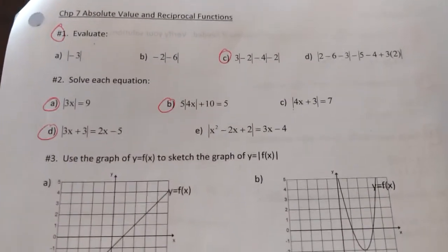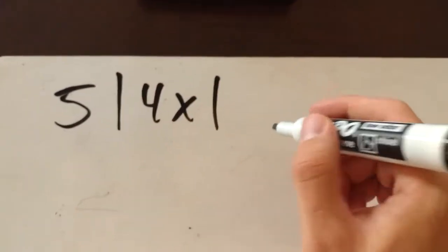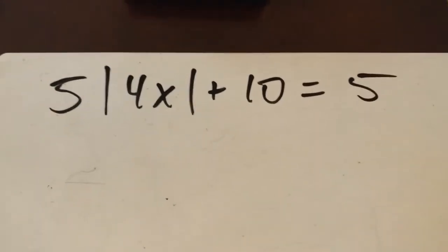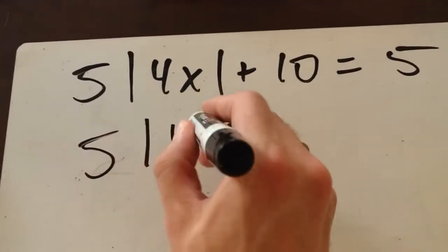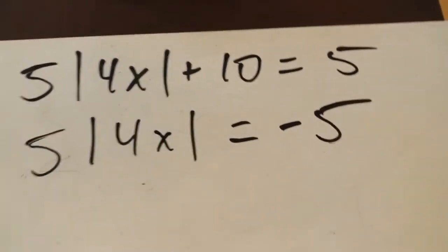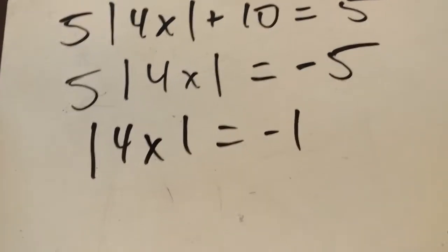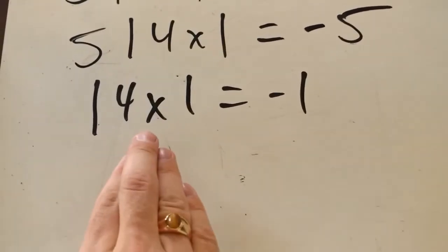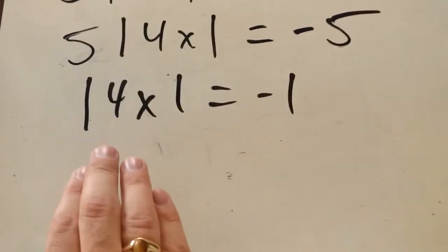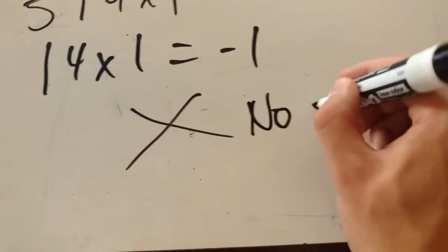Next is question 2b. The absolute value is hidden within the equation, so we isolate it first: 5|4x| + 10 = 5. Subtract 10 from both sides to get 5|4x| = −5, then divide both sides by 5 to get |4x| = −1. But here we have to stop — the absolute value always produces a positive number, so the absolute value of 4x cannot equal negative one. Therefore, there is no solution.